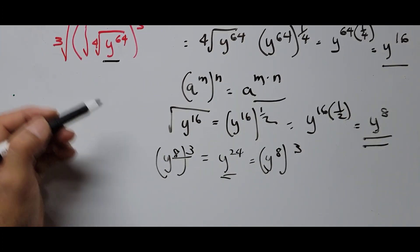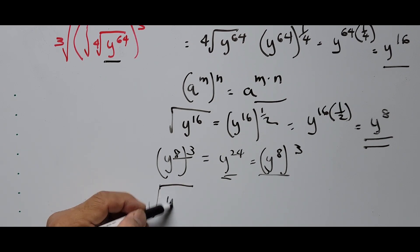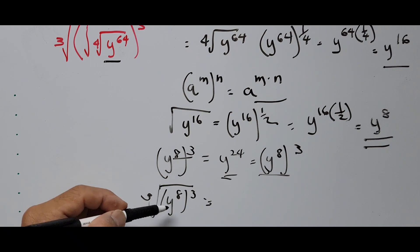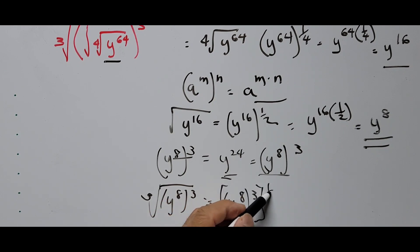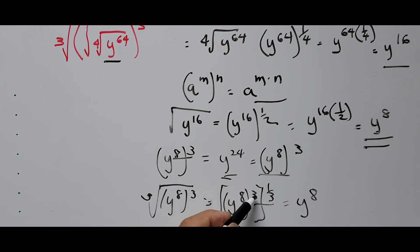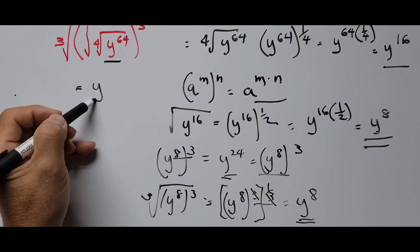Now the next thing we do is take the cube root of this term. That will be the cube root of y raised to the 8th raised to the 3rd power. Since this is a cube root and this term is raised to the 3rd power, those cancel out — 3 multiplied by 1/3 cancels — and we end up with y raised to the 8th power. So the numerator is equal to y raised to the 8th power.